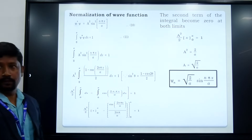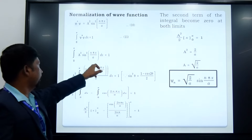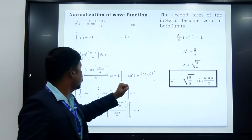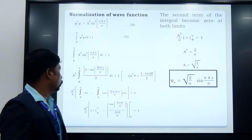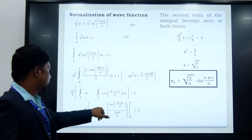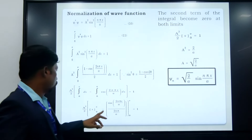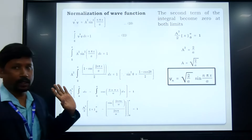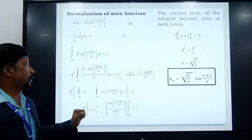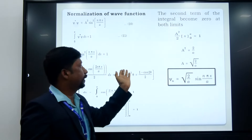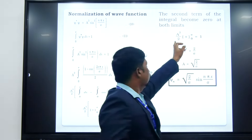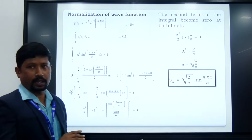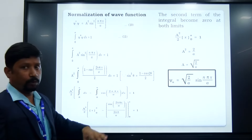Integrating the probability density from 0 to A, we get the integral from 0 to A of A² sin²(nπx/A) dx equals 1. Taking the constant A² out and applying the trigonometric formula sin²θ equals (1 minus cos2θ)/2, we modify the equation. After applying the limits, the cosine term vanishes, and we get A² divided by 2 into A equals 1. Shifting terms, we find A² equals 2/A, and taking the square root on both sides, A equals √(2/A). Substituting this normalization constant back gives the final normalized wave function.